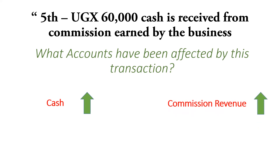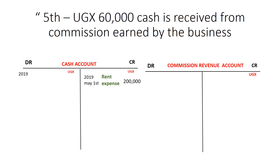The double entry for this is that we open up the two accounts. We debit the cash account by 60,000 — cash being an asset, and assets when they increase are debited. The other item affected is commission. This took place on the 5th. We complete the double entry in the commission revenue account — increases in revenue are credited — so we credit the commission revenue account with 60,000. The other account affected is cash, and this took place on May 5th, 2019.